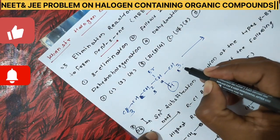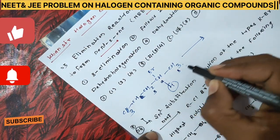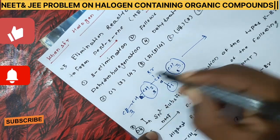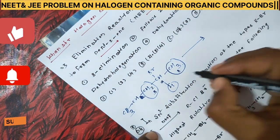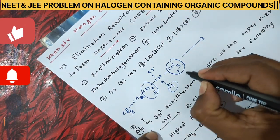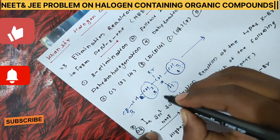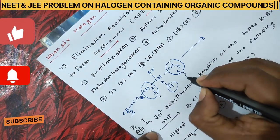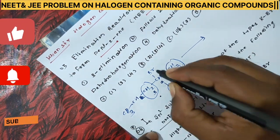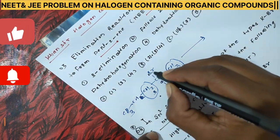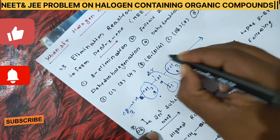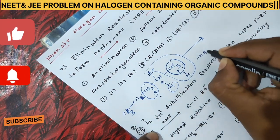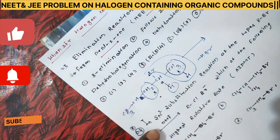The hydrogen is removed from the beta carbon where the number of hydrogens is greater. This beta carbon has 3 hydrogens and the other beta carbon has 2 hydrogens. So hydrogen is removed from the side with 3 hydrogens. HBr is eliminated — minus HBr is removed.